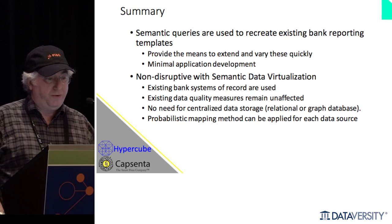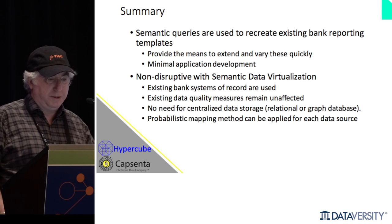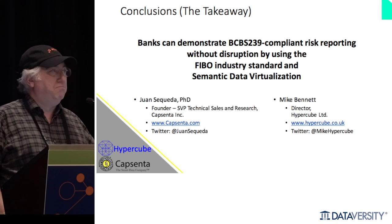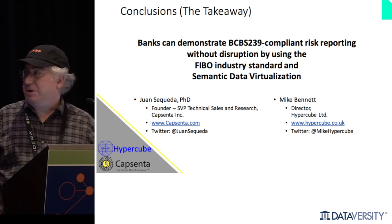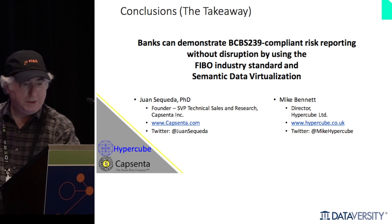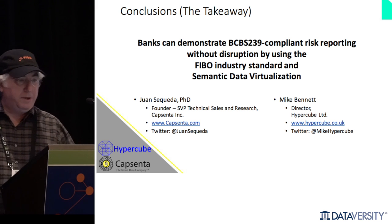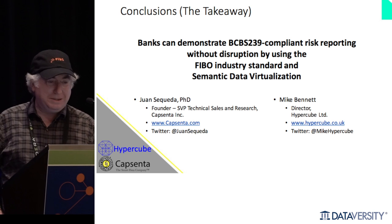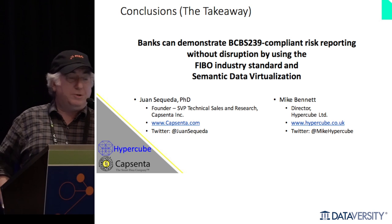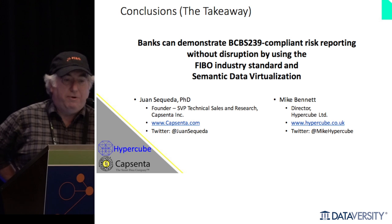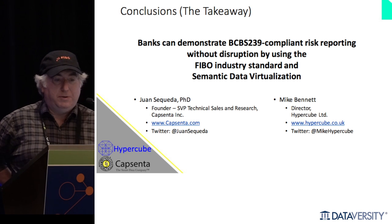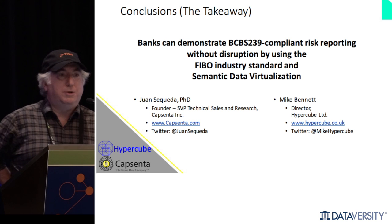It's non-disruptive. You're using existing systems of record and existing data quality measures. Getting information out in a timely way becomes a business problem with a business solution, thanks to technology that allows you to virtualize your data and provide — with minimum application development — the ability to extend and vary the reports you need. The takeaway: banks can demonstrate BCBS 239 compliant risk reporting without disruption by using FIBO and semantic data virtualization.